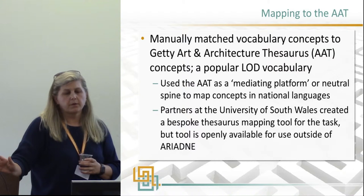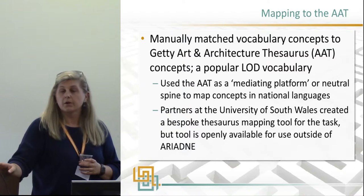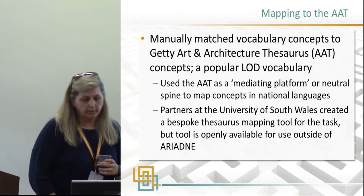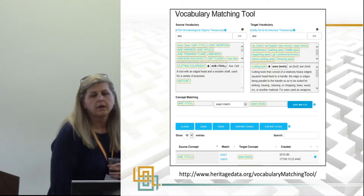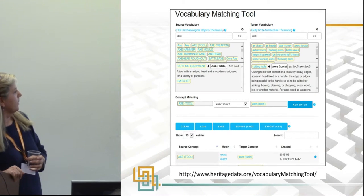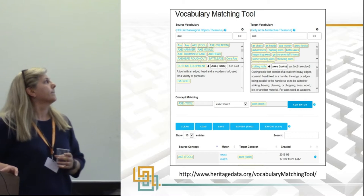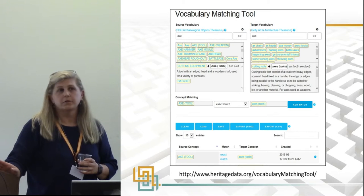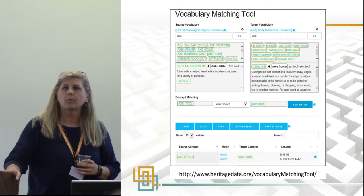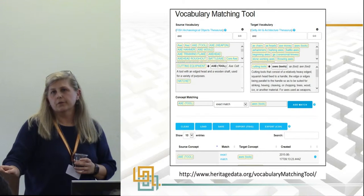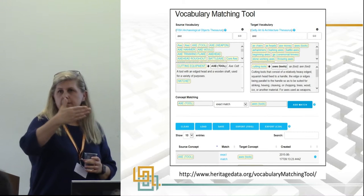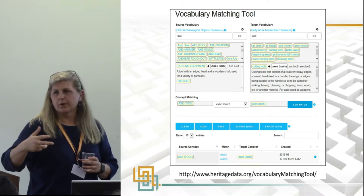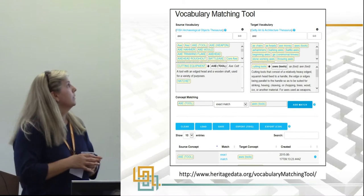In terms of what we actually did: we had each of the data-providing partners manually match their vocabulary concepts to the AAT, and we use the AAT as a mediating platform or neutral spine to map concepts across people's national languages. In order to actually do that, our partners at the University of South Wales created a thesaurus mapping tool that allows us to do this. Even though it was created for Ariadne, it is absolutely openly available for use outside of Ariadne. The code is freely available on GitHub if you want to take it and repurpose it. The key thing is that you're not matching terms to terms — you're a human being matching concepts to concepts — and once you've done the matching you can reuse your mapped vocabulary over and over.